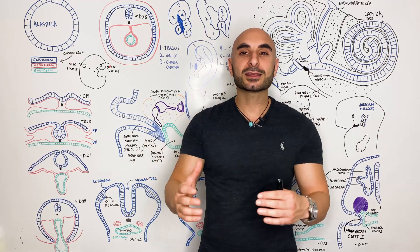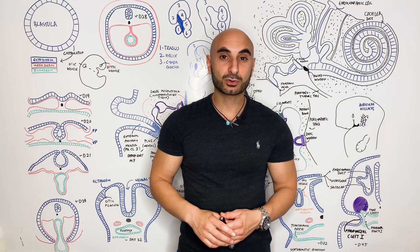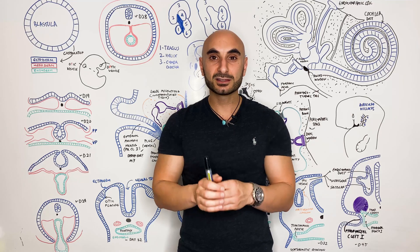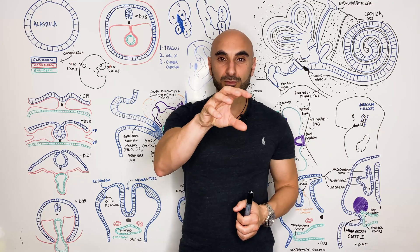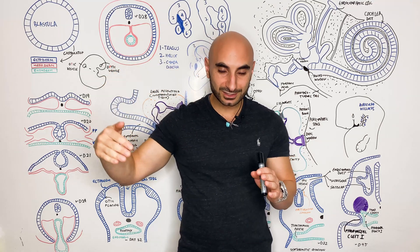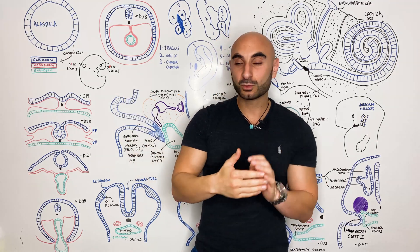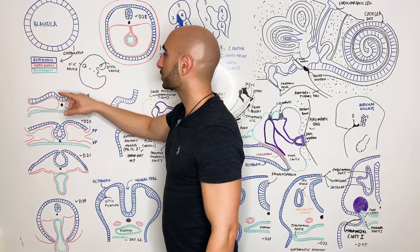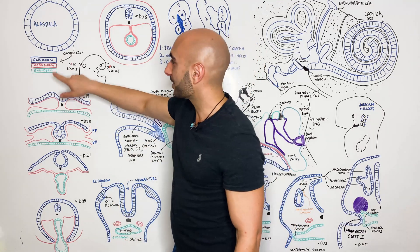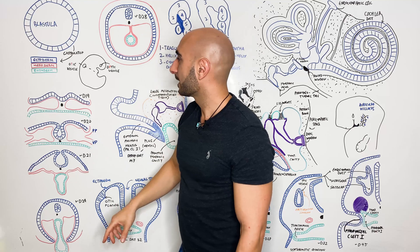Let's start at the beginning, at the blastula. The blastula is a ball of cells that's a product of fertilization when a sperm fertilizes an egg. That collection travels down the uterine tube into the uterine canal, implants into the uterine wall, and a process of gastrulation will form three germ layers. The germ layers are the ectoderm, mesoderm, and endoderm.